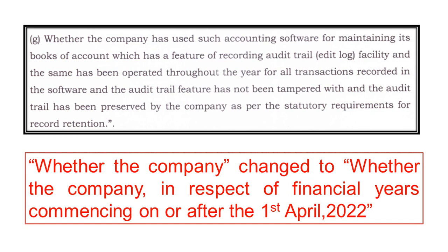Obviously, since the applicability in the Companies Accounts Amendment Rules 2021 was changed from 1st April 2021 to 1st April 2022, here also the words are added so that the application of accounting software with an audit trail feature is required from 1st April 2022. After that date, it will be checked and added in the auditor's report whether such accounting software with an audit trail feature is being used or not. This is a very important amendment — it was applicable from today but has been extended by a full year, from 1st April 2021 to 1st April 2022, for all companies maintaining books of accounts.